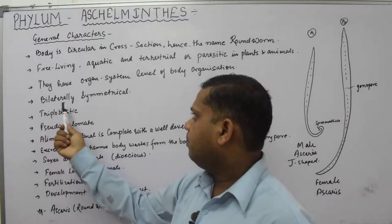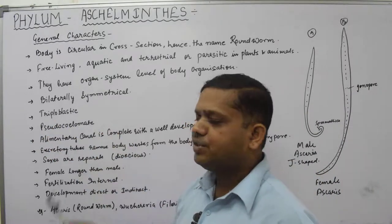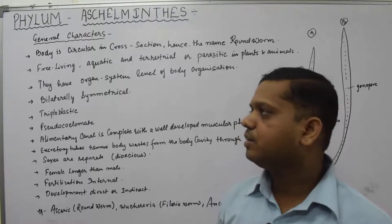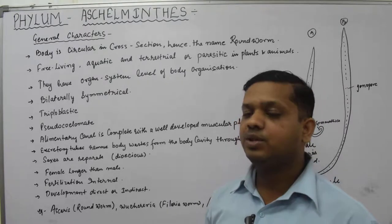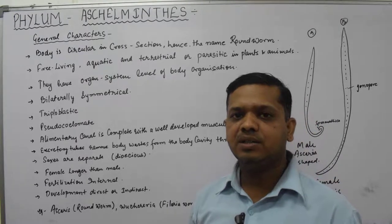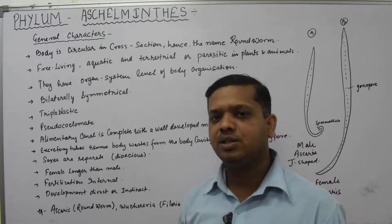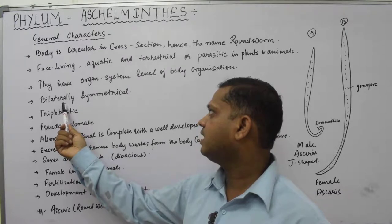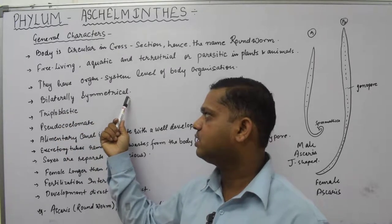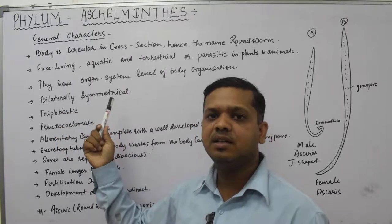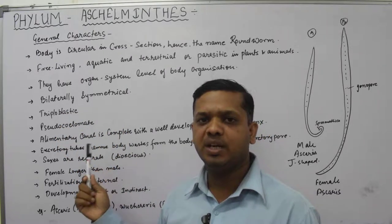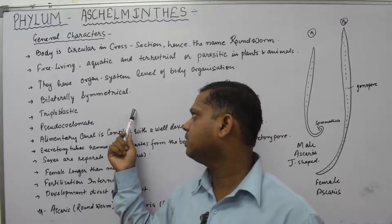Bilateral symmetry is found in this particular phylum. If you divide the animal, it will divide equally into two halves. That is called bilateral symmetry, which is present in this phylum Aschelminthes.